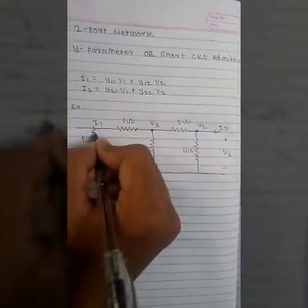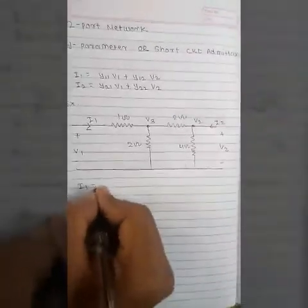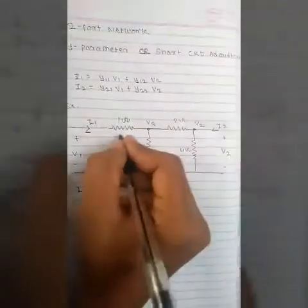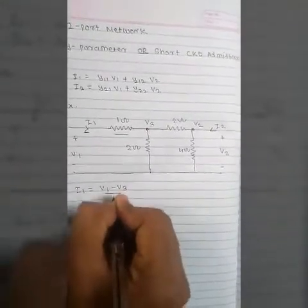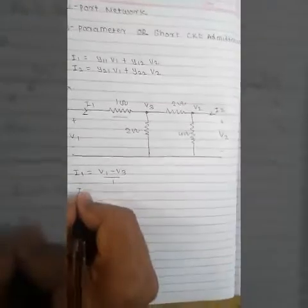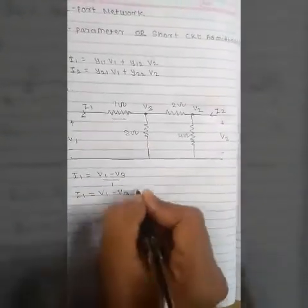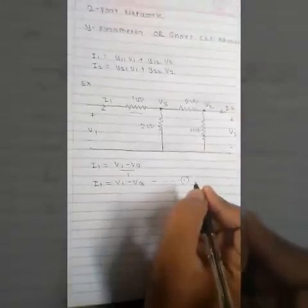Applying KCL at the first node: i1 equals (v1 minus v3) divided by 1 ohm, so i1 equals v1 minus v3. This is Equation 1.